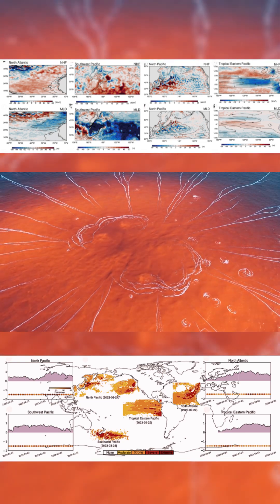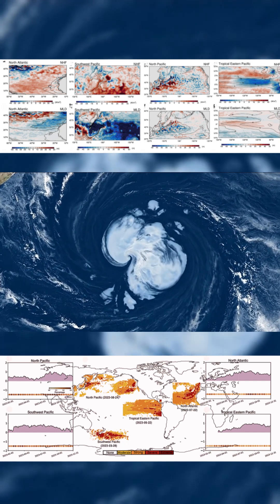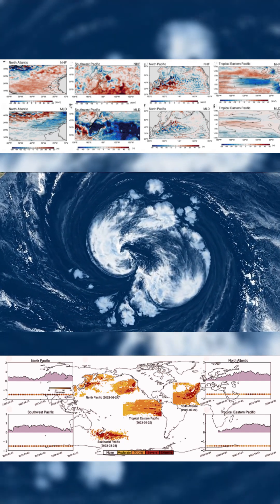Hurricane Milton, one of the most violent of 2024, formed over waters made hotter by these same conditions. We'll be tracking this closely.